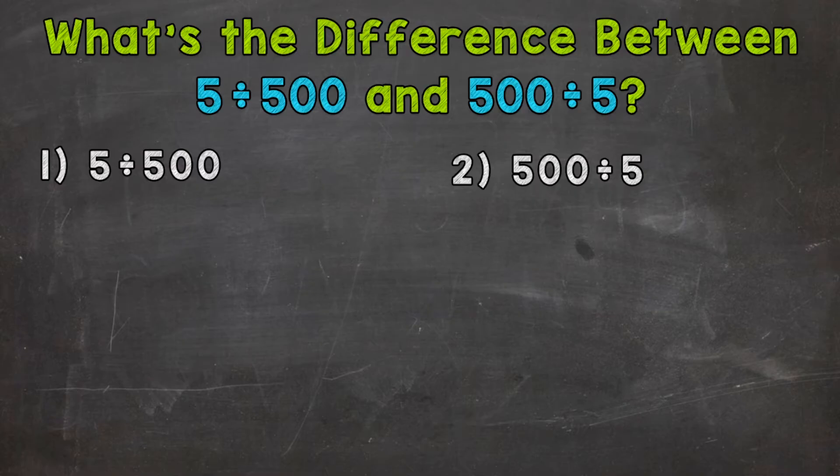So let's set this problem up. We have 5 divided by 500. So 5 is what we call our dividend. It's what's being split or divided up, and it goes under our division bar. So 5 divided by 500. Now, 500 is what we call our divisor. It's what we're dividing by. So let's put that on the outside.